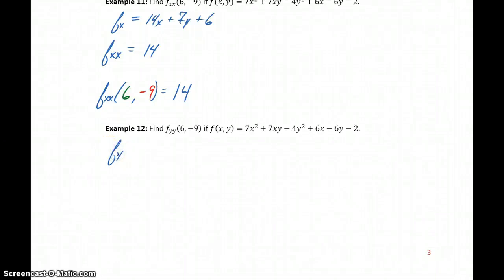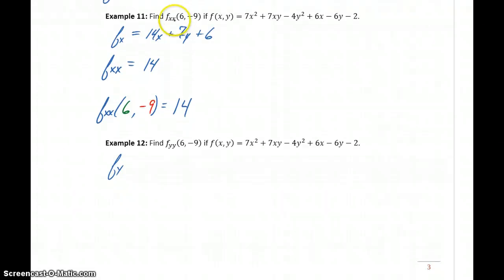In our last example, we want to find f_yy. In this case, the same function we were looking at in Example 11, except instead of taking both partial derivatives with respect to x, we'll take both with respect to y. This will become 0 plus 7x minus 8y minus 6. Then we'll take the derivative with respect to y to get -8. Again, it doesn't matter what (x,y) pair we consider, since there's no variable here, the second partial derivative will always give us -8.